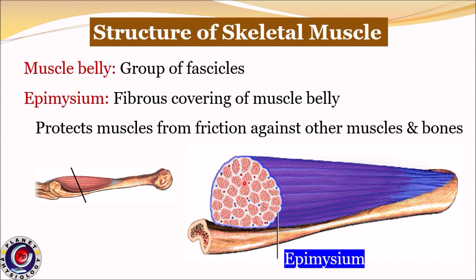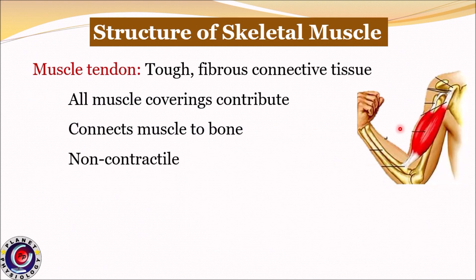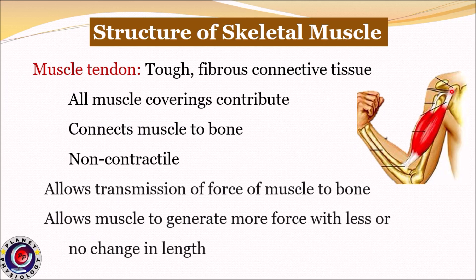Many such fascicles are bundled together to form muscle belly. It is covered by epimysium, the fibrous covering which protects the muscle from friction against other muscles and bones. All these connective tissue coverings contribute to formation of muscle tendons. They connect muscles to bones, are non-contractile in nature, but allow force to be transmitted to bones. They also allow muscles to generate greater force with lesser or no change in their length.